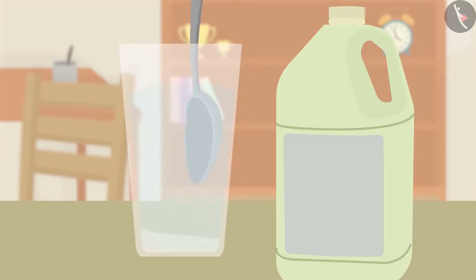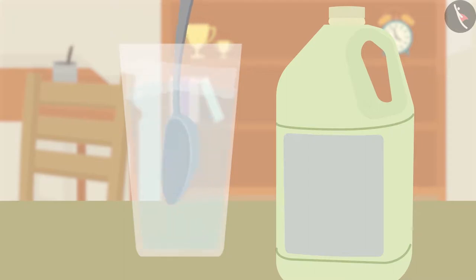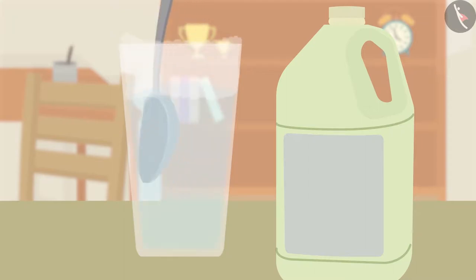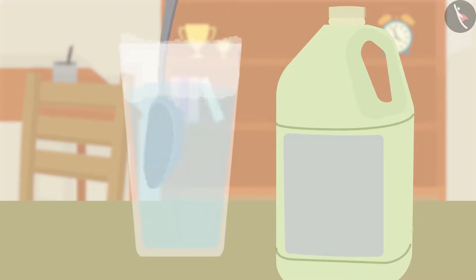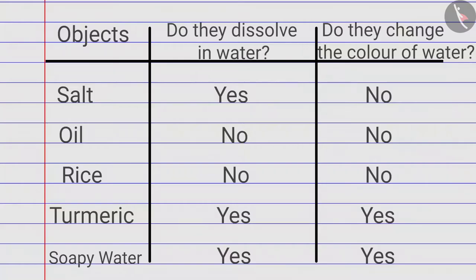In the last tumbler, Zia adds soapy water. It dissolves at once with water and bubbles start forming when stirred with a spoon. It dissolves in water and the water appears slightly milky.